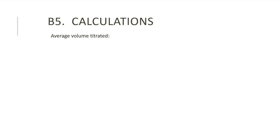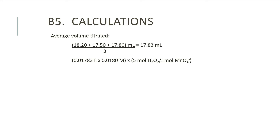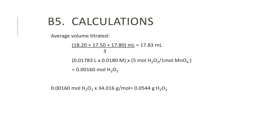Calculations. The first calculation is finding the average volume of permanganate solution needed to titrate the iron 2+ solution. The second equation uses dimensional analysis to find the grams of hydrogen peroxide. The third calculation finds the percent composition of hydrogen peroxide in the solution. The last calculation finds the percent error.